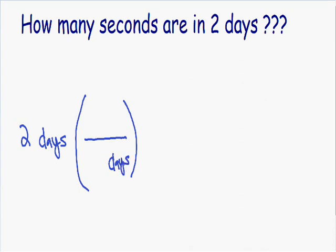And in our numerator, we need to put the units that we're ending with. Since we're converting days into seconds, we need to put seconds in our numerator. But I have no idea how many seconds are in a day, so I'm going to put hours in my numerator instead, because I do know how many hours are in a day. Since our numerator and denominator have to be exactly equal, we make the numerator 24 hours in one day, because 24 hours is exactly equal to one day. Now notice how our days cancel out and we are left with hours as our units.